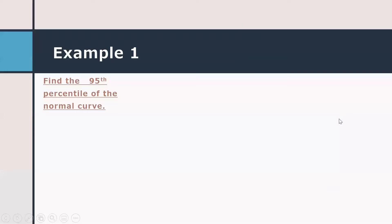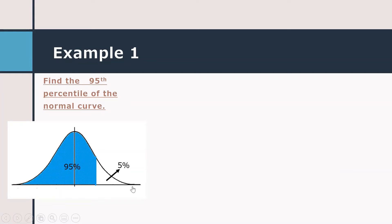Let us have example number one: Find the 95th percentile of the normal curve. The 95th percentile is the value at which 5% of the answers lie above that value and 95% of the answers lie below that value. We need to find that z-score.